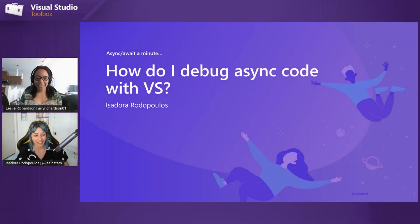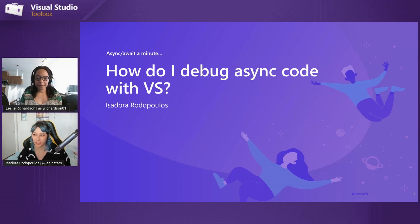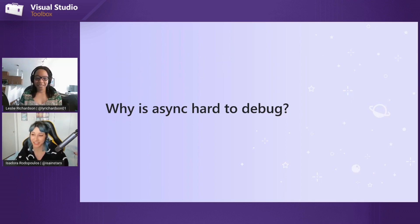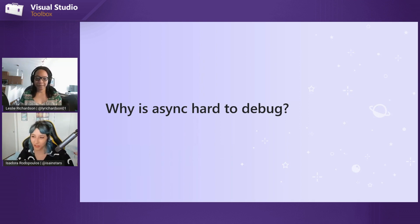I actually brought a little something with me which kind of illustrates that point. It's basically something we can just go through — why is async code hard to debug? For this context I will be using C#, so it's all async/await. But let's just get going with my example here.